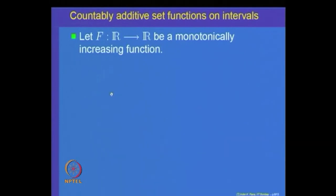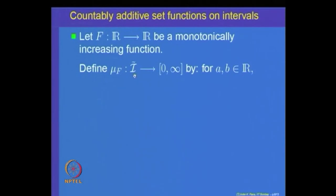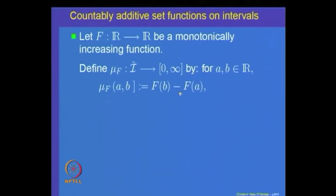The converse says: let f be a monotonically increasing function from R to R. Define a set function mu_f on the class of all left open right closed intervals as follows: for any real numbers a and b, mu_f of (a, b] is defined as f(b) minus f(a).